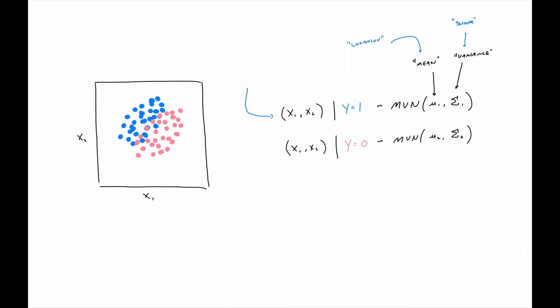So notationally, I'm going to say that the PDF of x1, x2, given y equals one, I'm going to label that f sub 1 of x. And similarly, for given y equals zero, I'm going to label that PDF as f sub zero of x.